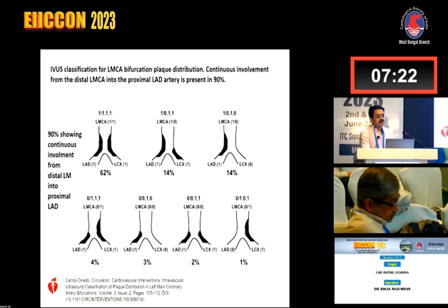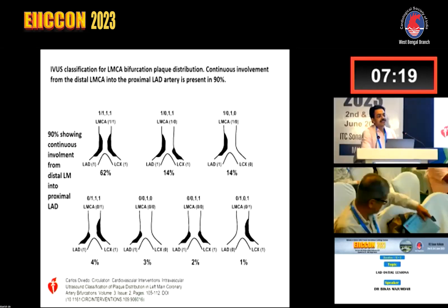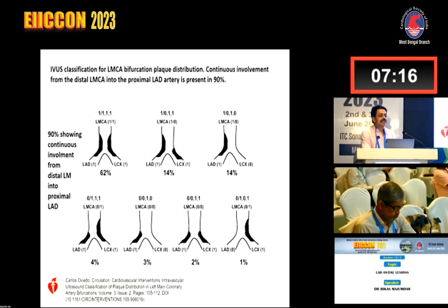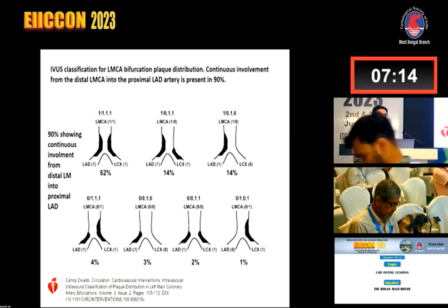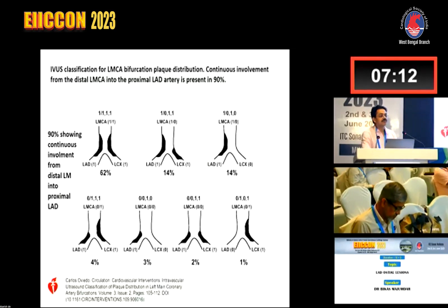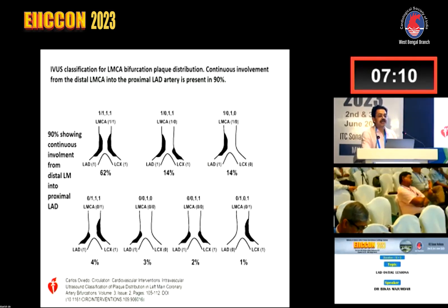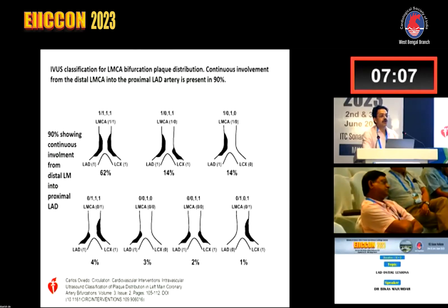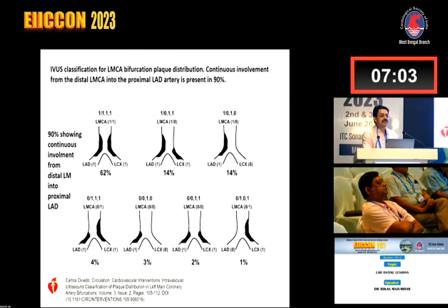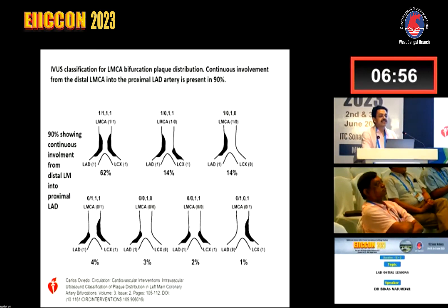If you look at the literature on osteo-proximal LAD disease, it is actually not confined to the LAD — it is a continuation of the distal left main into the LAD. About 90% of osteo-proximal LAD disease also involves left main stem disease. If you do IVUS in those patients, you can see that the osteo-proximal LAD disease also has left main stem involvement, which we often don't see on angiogram.